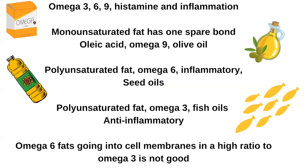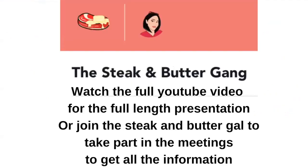Most people have heard of omega-3, 6, and 9. A monounsaturated fat has only one double bond - that's omega-9, found in olive oil. Omega-6 is a polyunsaturated fat with a few more double bonds - omega-6 tends to be inflammatory, mainly from seed oils. Polyunsaturated omega-3 has an anti-inflammatory effect. These fats go into cell membranes, and this all ties back to gut health. You can get 30 grams of fat from six eggs, a ribeye, three tablespoons of butter, or 28 grams of suet.